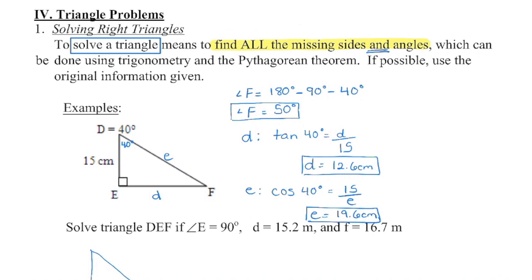We know all triangles have three sides and three angles. When we're asked to solve a triangle, it means we need to get the measures of all missing sides and angles. If possible, we want to use the original information given, because if we make a mistake calculating one angle, everything that follows will be incorrect. We can't always do that, but we're going to try as much as we can.